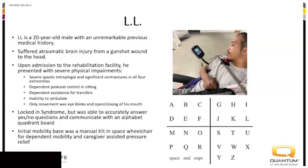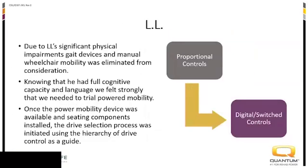His initial mobility base was a manual tilt-in-space wheelchair for dependent mobility and positioning. Because of his significant impairments, gait devices and manual wheelchairs were eliminated from consideration. After seeing how he was communicating with the alphabet quadrant board, we felt really strongly that we had to do what we could to get him mobility — get him independent, able to move from one place to another.